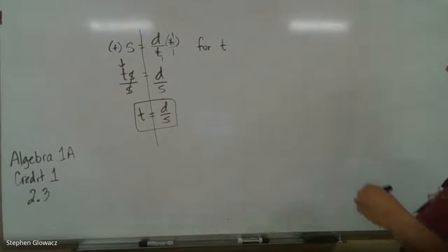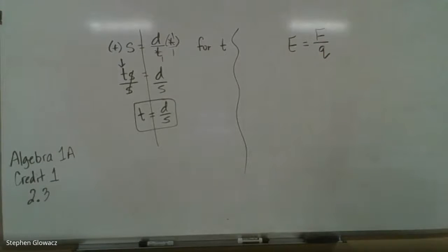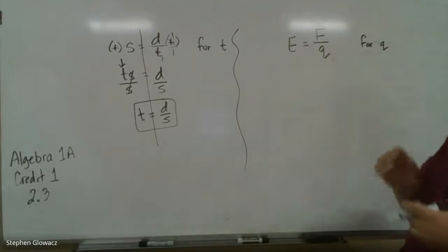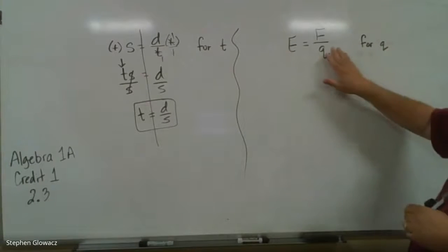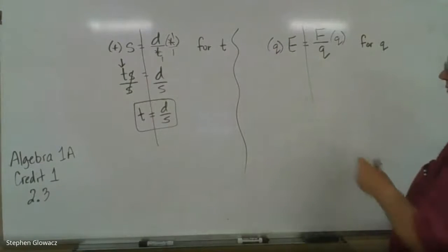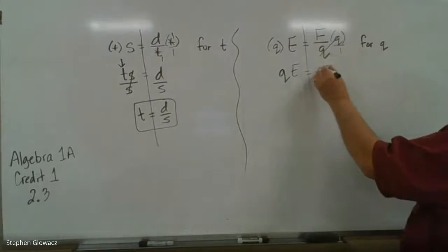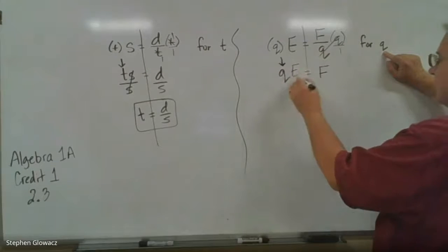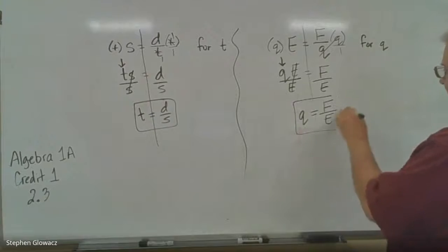Number six is very similar to what we just did in number five. We've got E equals F over Q, and we're solving for Q — again, the variable in the denominator. Same first step: we want to get rid of that fraction. We multiply by Q on both sides — the Q's cancel, leaving F. We're solving for Q, and Q is being multiplied by E, so we divide by E on both sides. We get Q equals F over E.